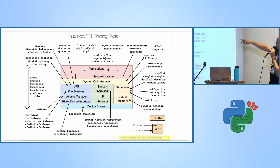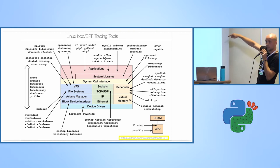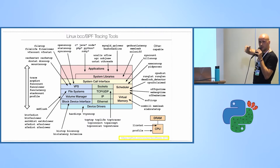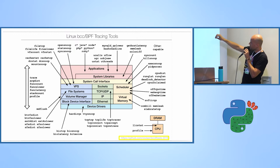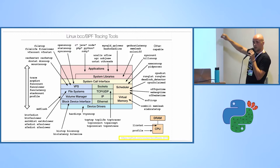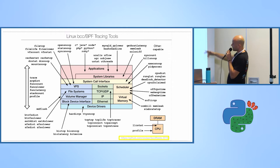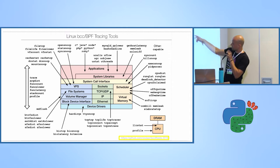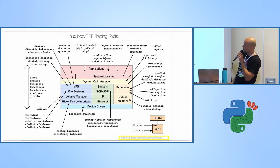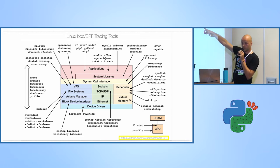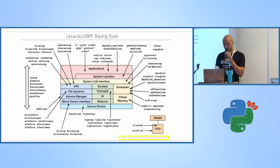We have predefined hooks in the Linux kernel starting from version 4.7, for almost every interesting point we might want to trace — whether it's the scheduler, file system, sockets, device drivers, the system call interface, or even user space. We'll talk about a few of these tools.